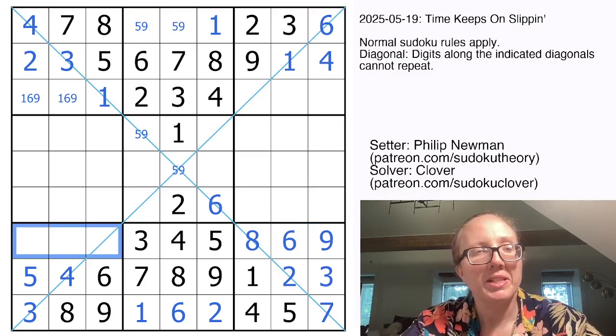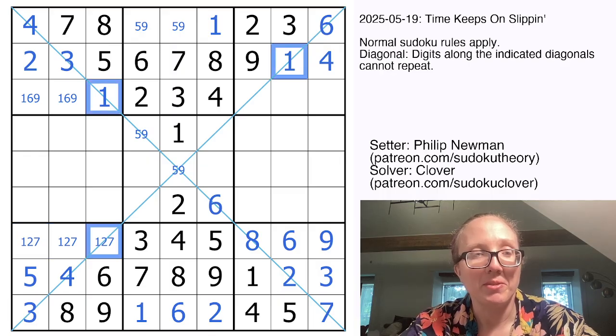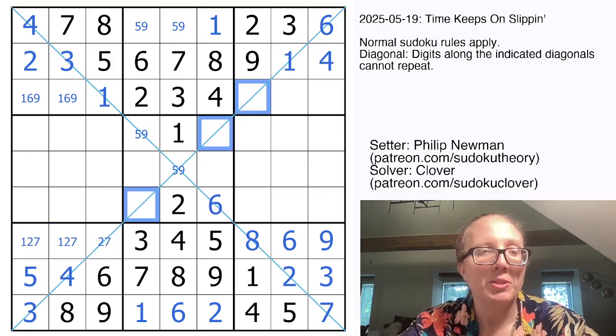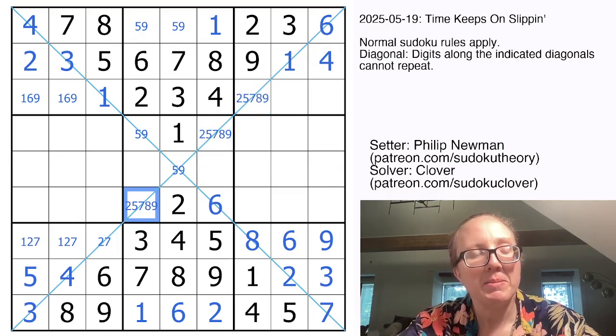Now over here I still need 1, 2, and 7 in this region for a couple reasons. This cell can't be a 1. So what else do I need here? I have 1, 3, 4, and 6, so I need 2, 5, 7, 8, and 9. These can't be 2, nor can they be 5 or 9 because of the 5, 9 pair. So that makes those a 7, 8 pair.